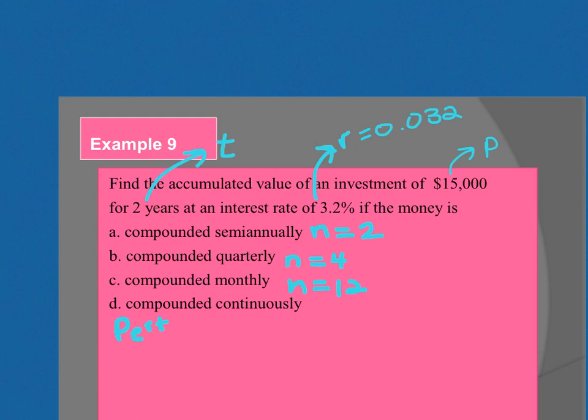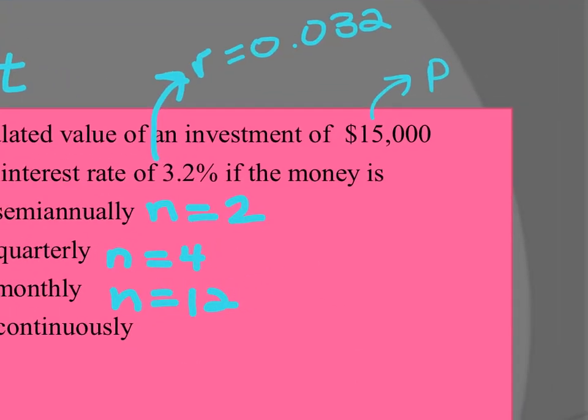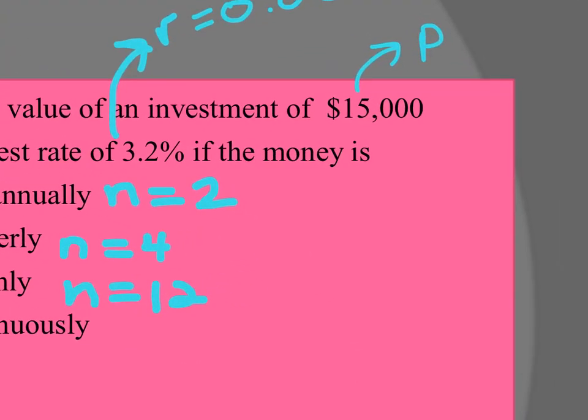Those are things I expect you to know. How many weeks are in a year? How many days are in a year? Probably wouldn't go more than that, but you've got to at least know that stuff. Alright, so now I'm going to plug them in. So into the calculator goes 15,000 times 1 plus .032 over, for the first one it's 2, raised to the N, which is 2, and T, which is 2.